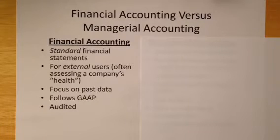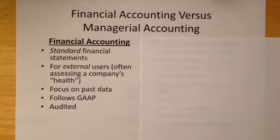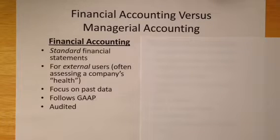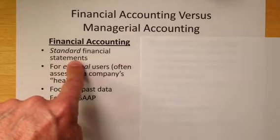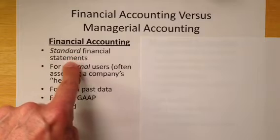You might remember different types of accounts, including cash, accounts receivable, accounts payable, land, buildings, notes receivable, notes payable, common stock, and retained earnings. If you did your debits and credits properly and followed the rules, then the balances in the accounts were correct. And if the balances in the accounts were correct, then you'd be able to produce standard financial statements that would be correct.